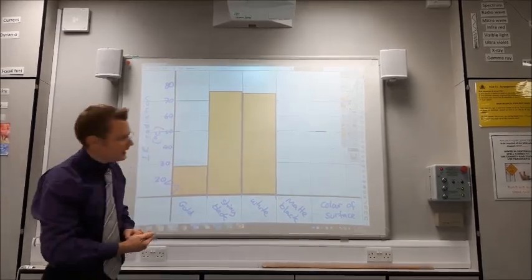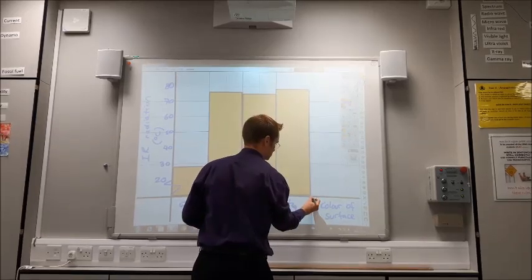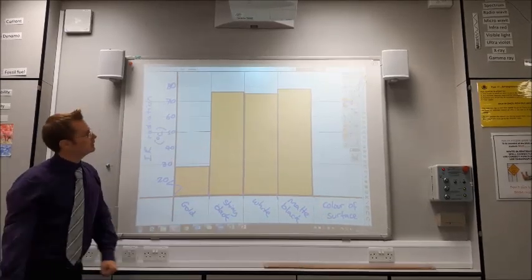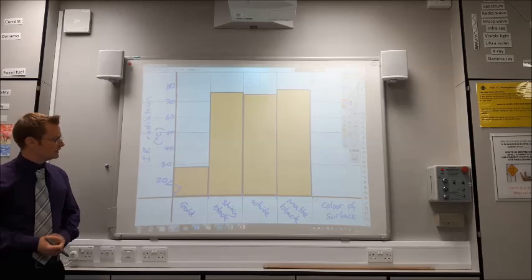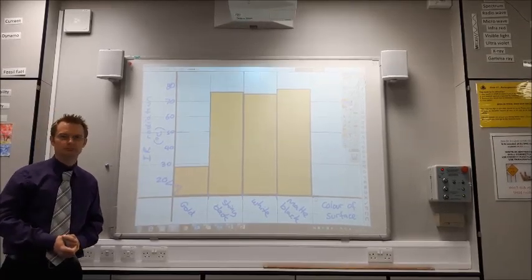And for matte black, it was 78. So, there is our bar graph, clearly showing that the shiny gold surface emitted the least radiation. Thank you.